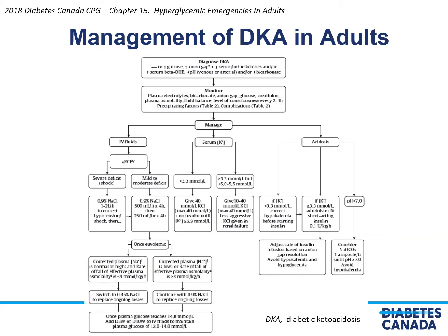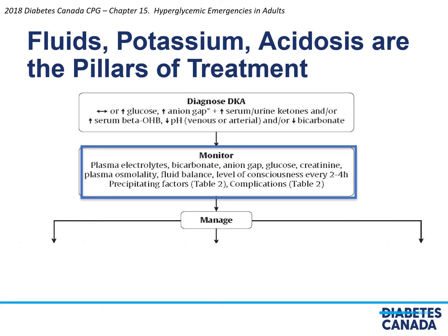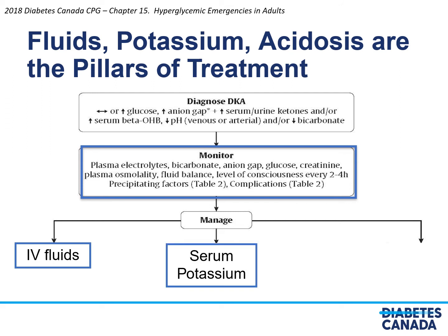This slide highlights an overview of the management of DKA in adults. Fluids, potassium, and acidosis are the pillars of treatment. In terms of monitoring, one would follow plasma electrolytes, bicarbonate, anion gap, glucose, creatinine, plasma osmolality, fluid balance, and level of consciousness every 2 to 4 hours depending on severity. The precipitating factors and complications also have to be monitored for.